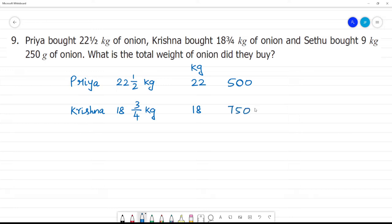Okay, 3/4 is 750 grams. Now Sethu. Sethu bought 9 and 1/4 kg. That's 9 kg and 250 grams.